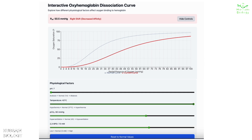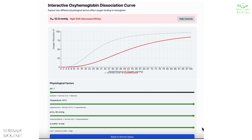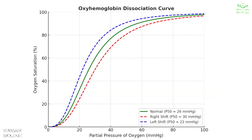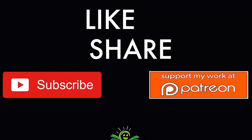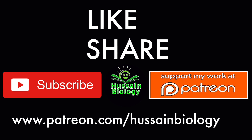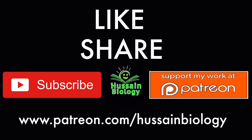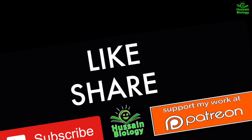This is how the curve shifts when physiological factors change. In this diagram we can see both the left and right shifts in comparison with the standard sigmoidal curve. That's the oxygen-hemoglobin dissociation curve — if you liked the video, give it a thumbs up, support the channel, and make sure to subscribe.